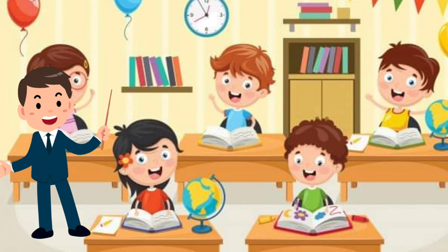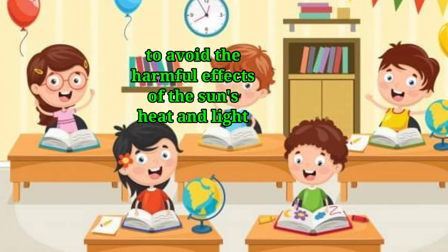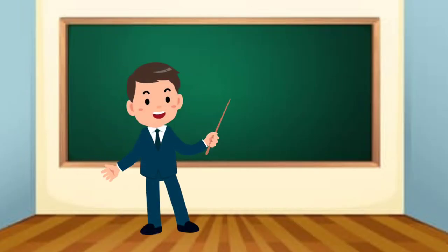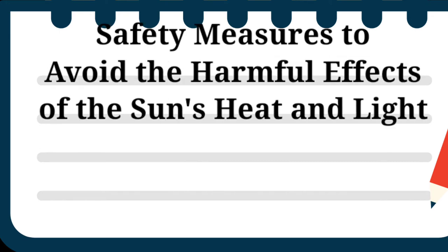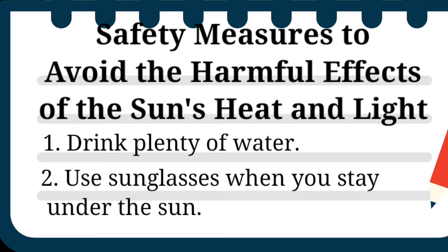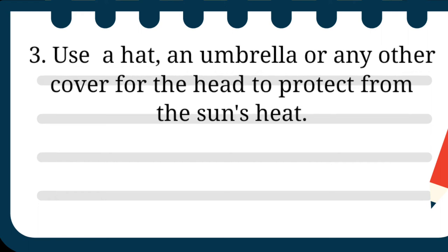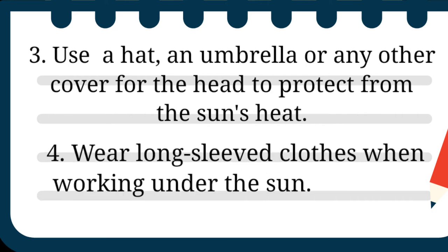Kids, why do you need to follow the safety measures to avoid the harmful effects of the Sun's heat and light? Very smart! Will you enumerate the safety measures? They are: drink plenty of water; use sunglasses when staying under the Sun; use a hat, an umbrella, or any other cover for the head to protect from the Sun's heat; wear long-sleeved clothes when working under the Sun.